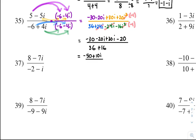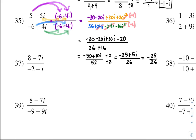All over 52. Negative 50, 10, and 52 are all even numbers, so you can divide top and bottom by 2: negative 50 divided by 2 is negative 25, 10i divided by 2 is 5i, and 52 divided by 2 is 26. Then split the fraction into a plus bi form: negative 25 over 26 plus 5 over 26i.